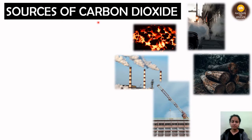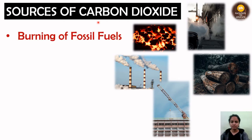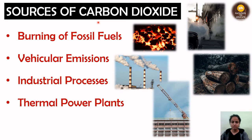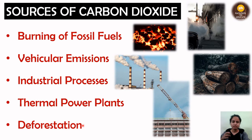The sources of carbon dioxide that cause ocean acidification include burning of fossil fuels, vehicular emissions, industrial processes, thermal power plants, and also deforestation. Deforestation reduces the number of trees, and hence the uptake of carbon dioxide by trees for photosynthesis decreases, resulting in more carbon dioxide in the atmosphere.